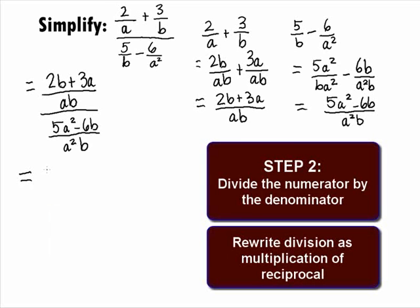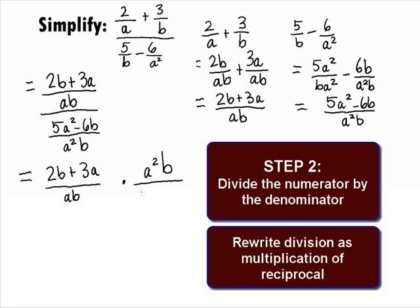In Step 2, we need to divide the numerator by the denominator. We can do this by rewriting this as a multiplication of the reciprocal of that denominator. So we can rewrite this as 2b plus 3a over ab times the reciprocal of that denominator, which is a squared b over 5a squared minus 6b.